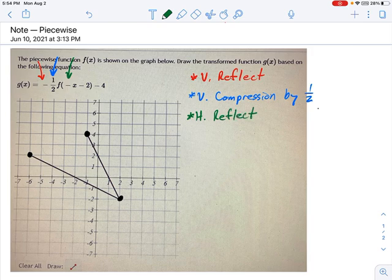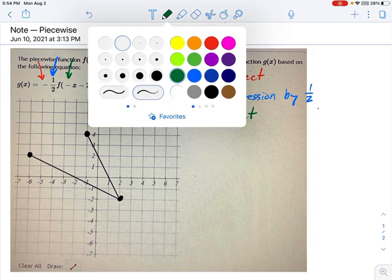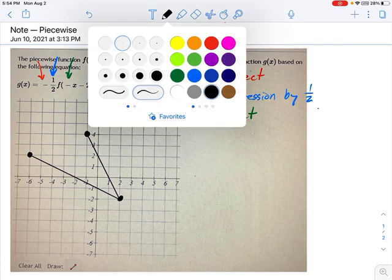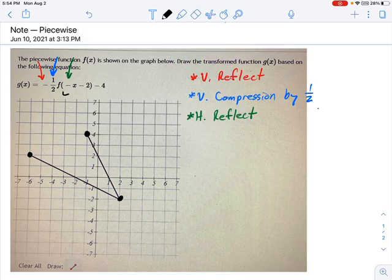And what's more than that, we have an equation here that was written in an intentionally tricky way. If you look here, see this negative x minus 2? We really want to factor out that negative sign.